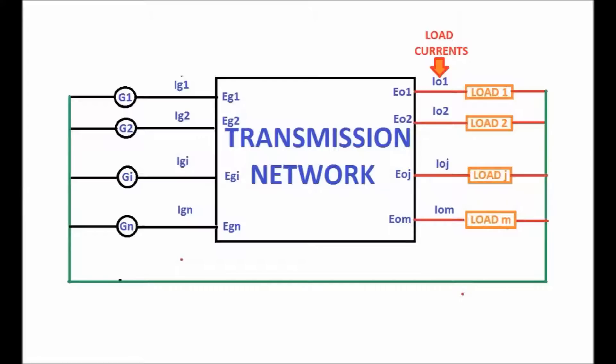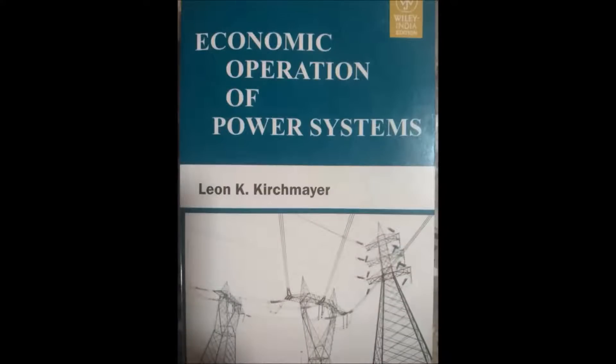L.K. Kirchmeyer, a pioneer in the field of electric power and control systems, was a manager of the systems planning and control section, electric utility division of General Electric Company, New York, USA. He wrote a book on economic operation of power systems. The book is one of the first textbooks followed in technical institutions.